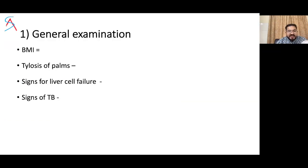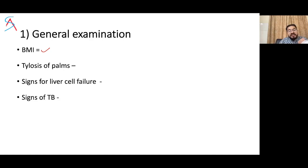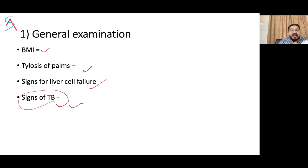Returning to general examination: BMI is important to comment on nourishment. Obesity itself is a risk factor for many diseases. Look at the palmar erythema and signs of liver failure, which will be discussed in the next slide. Signs of TB will be covered in pulmonary examination. Abdominal TB is mostly secondary to pulmonary TB.